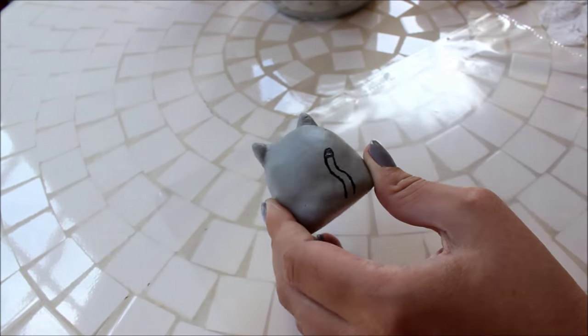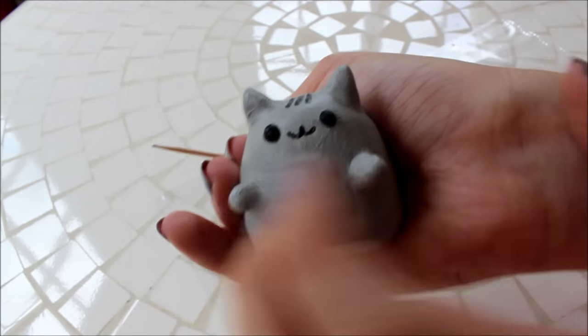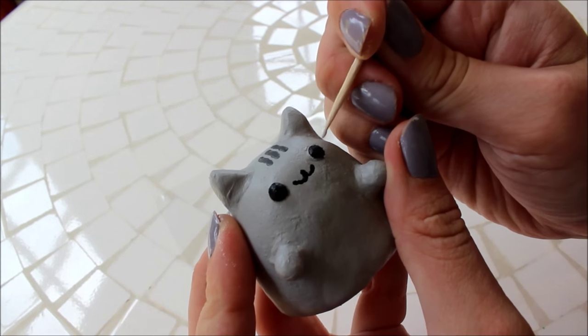Add a tail at the back with black paint and add some stripes to it with dark grey paint. Finally, add two white dots on the eyes to complete the face.